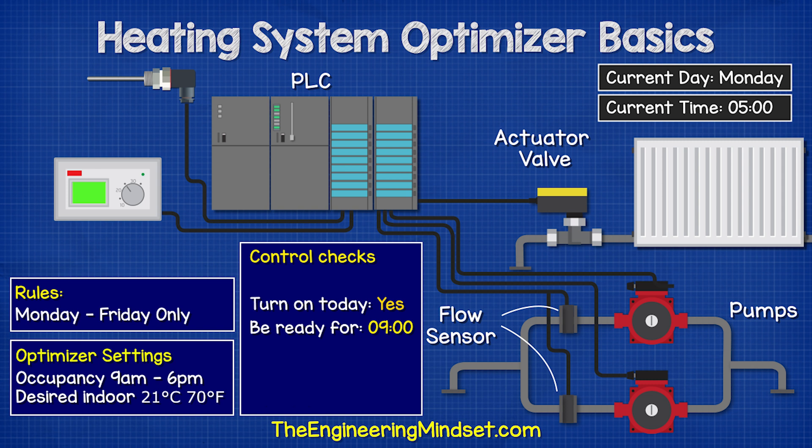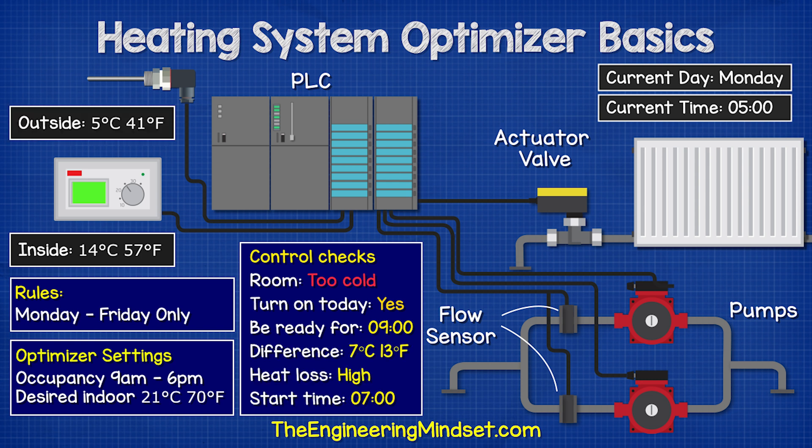The PLC checks the current temperature of the room and calculates the difference between this temperature and the desired temperature. It then checks the outdoor temperature to calculate how long it will take to heat the building, because on a cold day it will take longer, so it will need to start earlier.